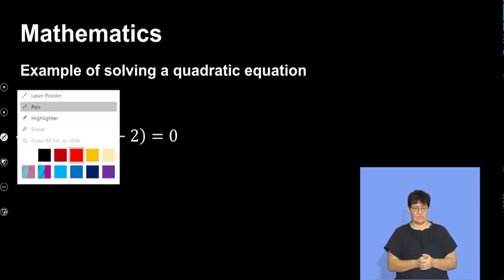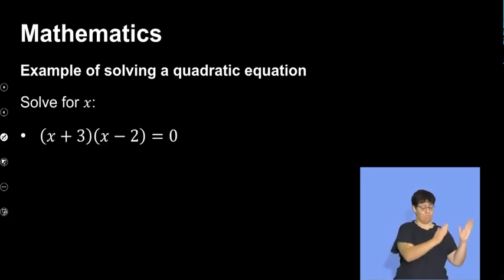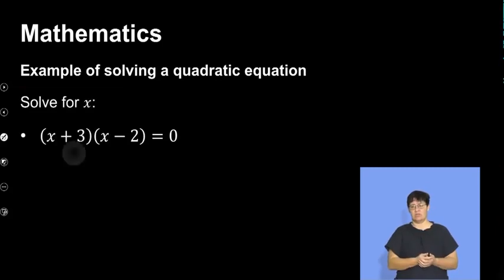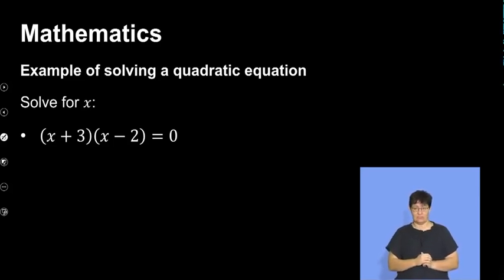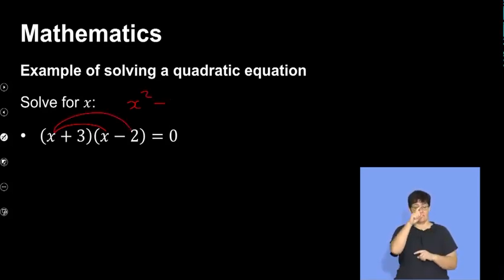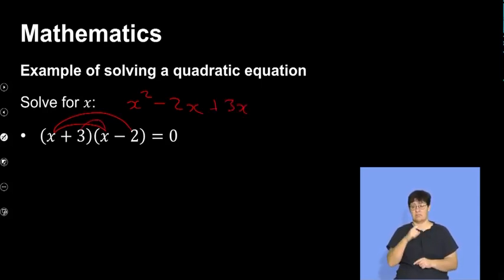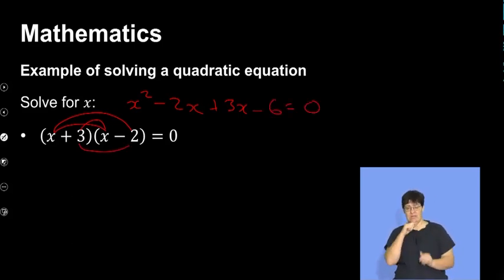Another example is when I have two brackets. When you expand this it will definitely give us a quadratic equation. I'll quickly show you that just to show you the quadraticness of this equation. So x multiplied by x gives x squared, x multiplied by negative 2 gives negative 2x, then 3 multiplied by x gives 3x, and lastly 3 multiplied by negative 2 gives negative 6, equal to zero. So automatically you can see my squared is there — that's the definition of a quadratic equation.